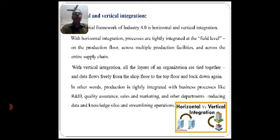The integration framework of Industry 4.0 works in two ways: horizontal integration and vertical integration. In horizontal integration, processes are tightly integrated at the field level on the production floor, across multiple production facilities, and across the entire supply chain. With vertical integration, all the layers of an organization are tied together and data flows freely from the shop floor to the top floor and back down again.